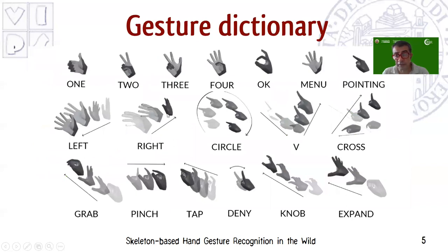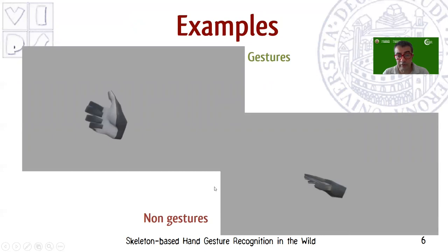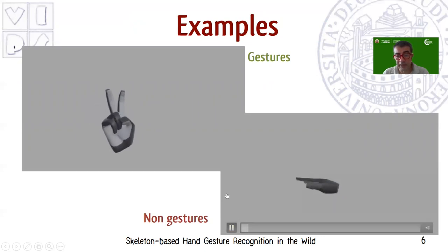The dictionary of gestures used for this contest includes three kinds of gestures. Static gestures, like the one shown in the first row, are characterized by a static pose of the hand kept for at least one second. The second type is coarse dynamic gestures, characterized by a single trajectory of the whole hand. The third type is dynamic fine gestures, characterized by the articulations of the fingers. Here are some examples of gestures recorded by our systems, and for example, non-gestures — non-significant hand motions.